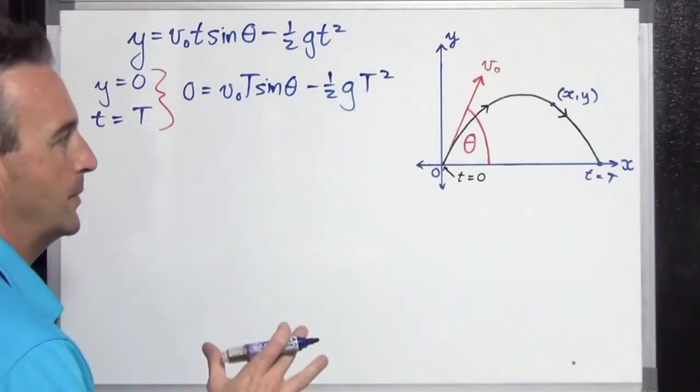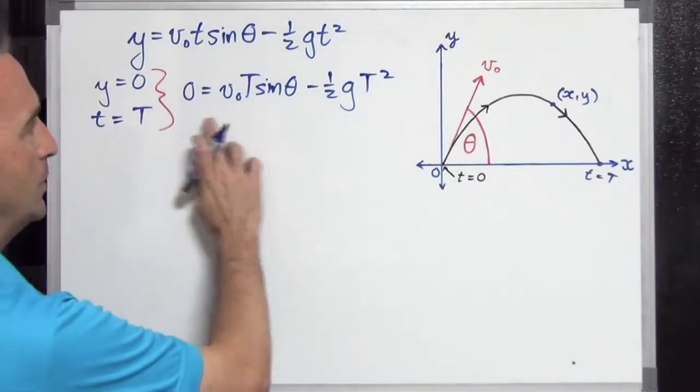It's going to give us zero equals v naught capital T sine theta minus half g capital T squared. And we have to solve this for capital T, we're looking for this time here.